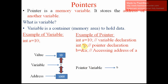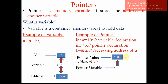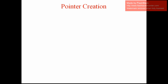When I create int *b, the pointer variable is created. When I give b = &a, it stores the address of 'a'. What is the address of 'a'? 1000. So 1000 is stored into variable 'b'. Now remember, 'b' is also a variable so it has its own address — the address of 'b' might be 1004. The syntax for creating a pointer is: data type, space, asterisk, then pointer name.